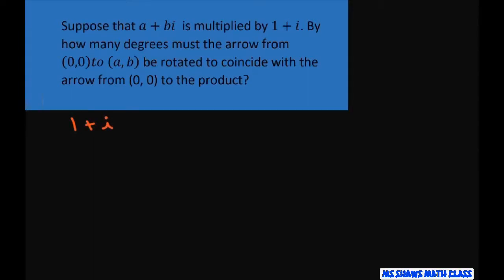Let's find our r and theta here. So r is going to equal the absolute value of 1 plus i, which is the square root of 1 squared plus 1 squared, equals square root of 2.